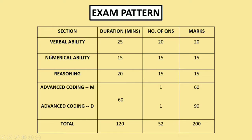In numerical ability, the topics include time and work, percentage, equations, permutation and combination, probability, ratio and proportion, profit and loss, series and progression, time speed and distance, and more. I will also discuss which topics are more important compared to others in this video.